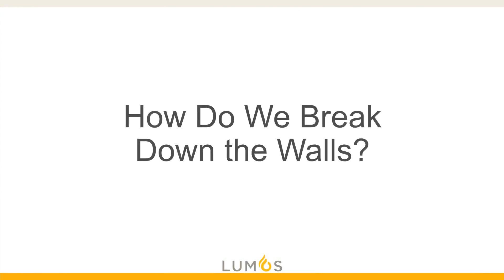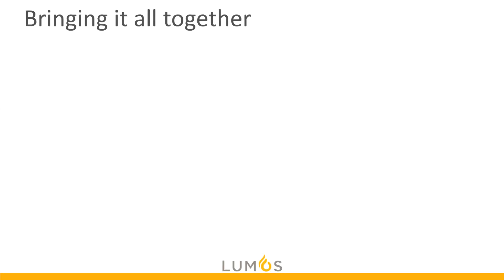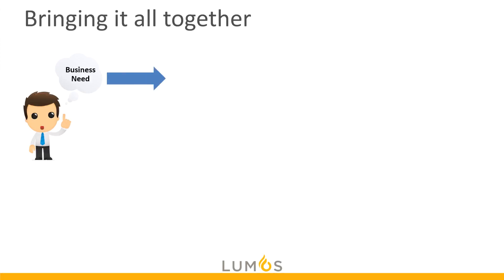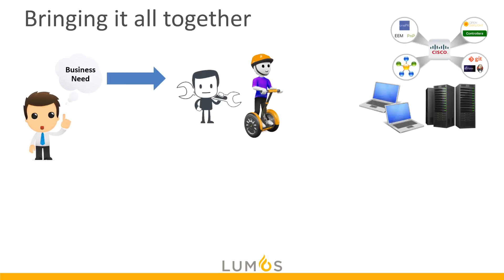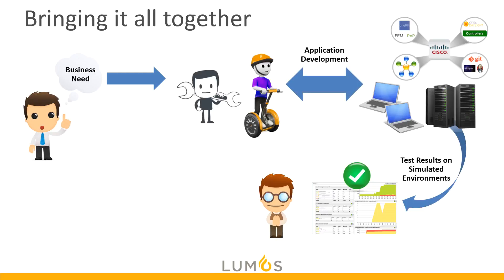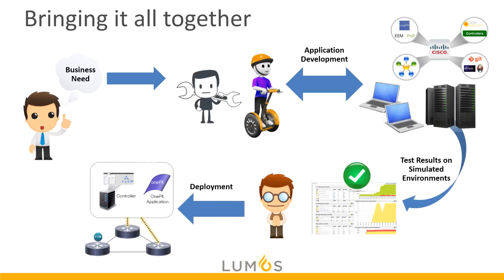So how do we break down the walls? Bringing it all together: we have the business need — obviously the most important thing. We have our developers, DevOps, and network guys bringing it together, and we automate these things with application development and a rich toolset. We do simulated environment testing, and then that rolls into deployment.